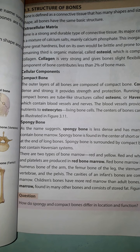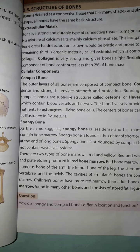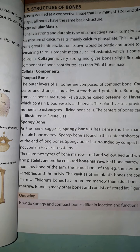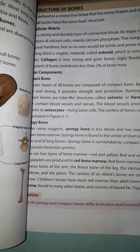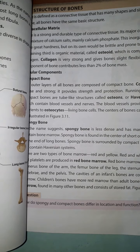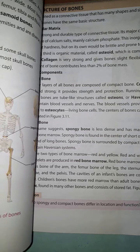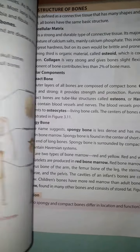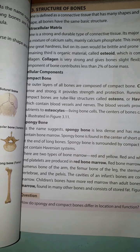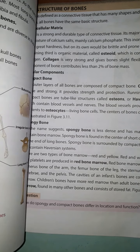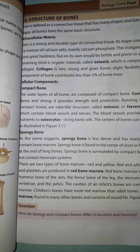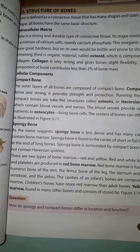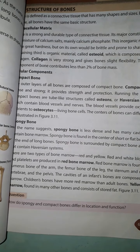Red bone marrow has the power to produce blood cells. Red bone marrow is found in the humerus bone of the arm and the femur bone of the leg.